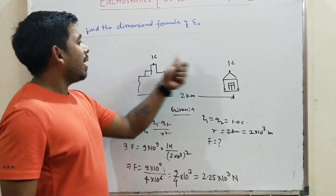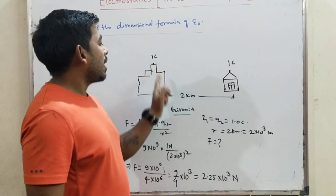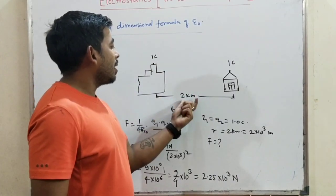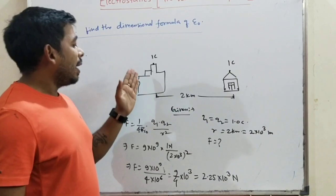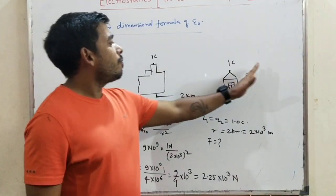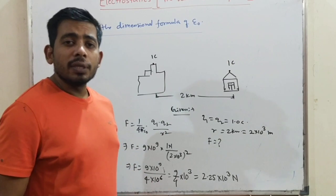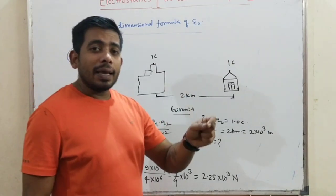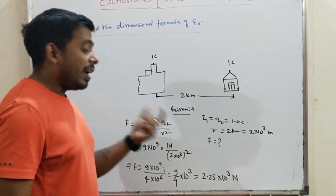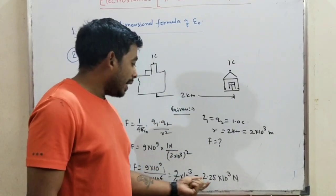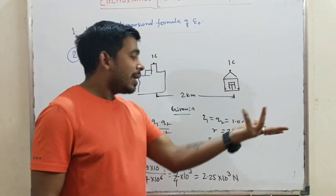1 coulomb charge, separation 2 km — that gives us the Coulomb force. After that, we compare this force to the weight. The force versus weight comparison is next.